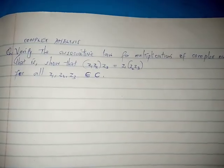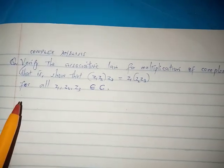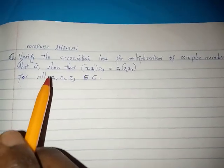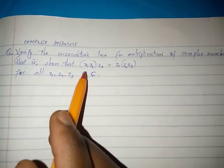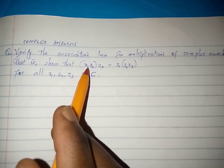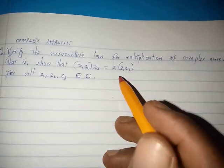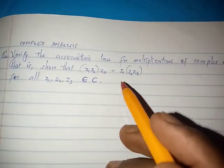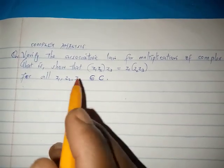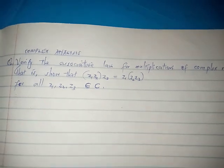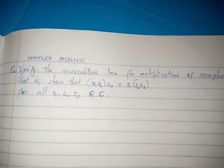Hello, this is Filipino Explaining Complex Analysis. Verify the associative law for multiplication of complex numbers. That is, show that (Z1·Z2)·Z3 = Z1·(Z2·Z3) for all Z1, Z2, and Z3 belonging to C.